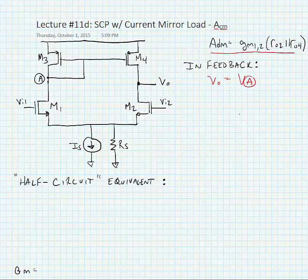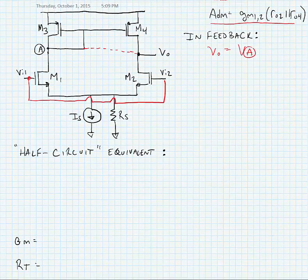This is because feedback is going to try and equalize the voltages on all the transistors. So we can draw a virtual connection between node VA and the output node since no current would flow through there because there's no voltage across it. We're going to make a common connection between VI1 and VI2 because we're finding a common mode gain.